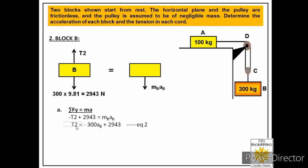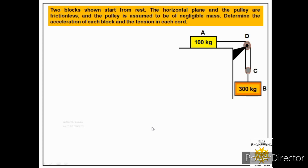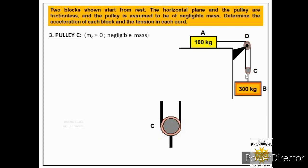This equation has two unknowns — tension T2 and acceleration aB — so we cannot solve it yet. We label it Equation 2. We now consider the third body in the problem: pulley C. Since the problem states the pulley has negligible mass, we set mC = 0 and draw its free body diagram.